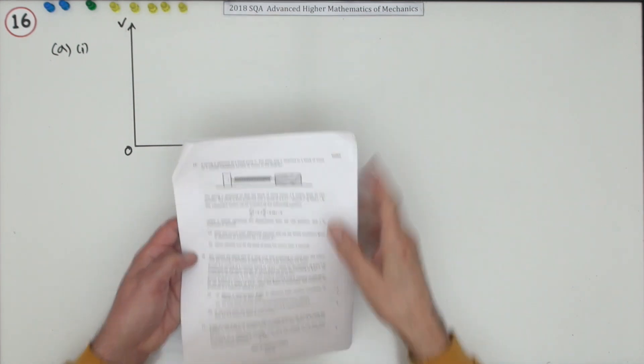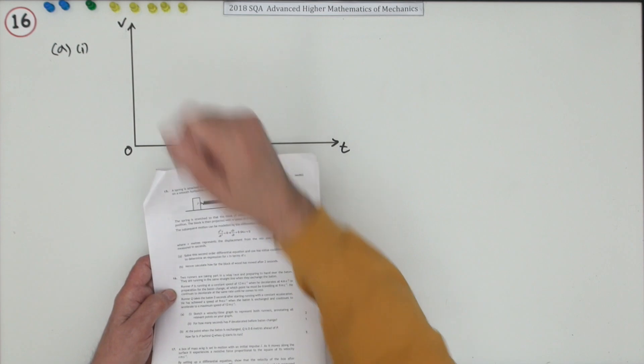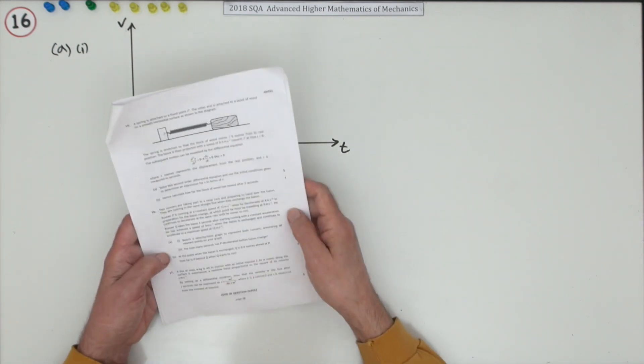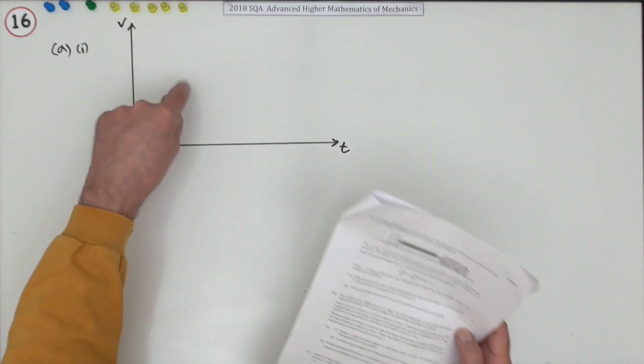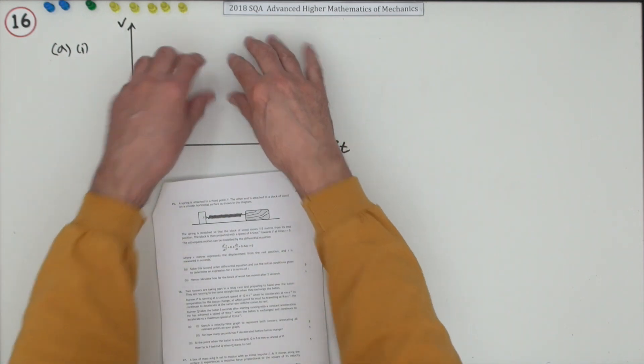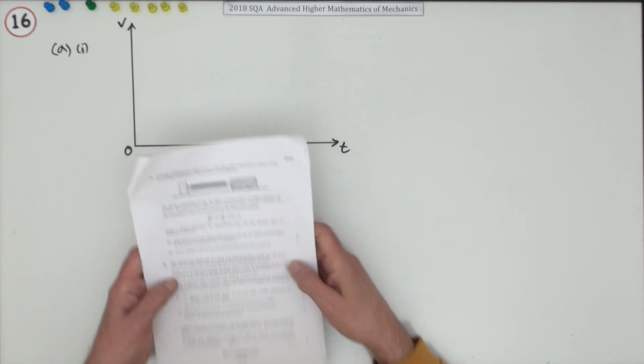So number 16 then from the 2018 SQA Advanced Higher Mathematics of Mechanics. An 8 mark question here in three parts. A wordy question you need to read, but noticing the first part in A says sketch a velocity time graph. So this initial part must just be describing what you're going to be putting into this for two marks.